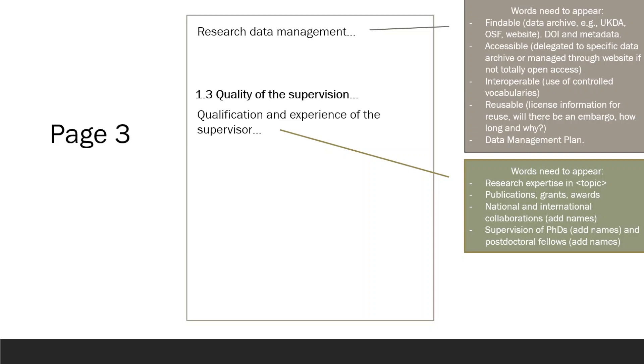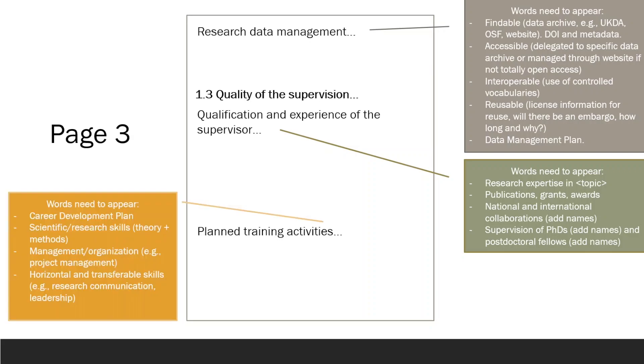You can even discuss age indexes, citation counts, invited lectures, and their previous supervision of successful Marie Curie Fellows. Name specific and preferably moderately famous scholars with whom the supervisor collaborates nationally and internationally. Mention the PhD students and postdoctoral fellows who have worked with the supervisor. In the planned training activities section, indicate that you will develop a career development plan in collaboration with your supervisor.